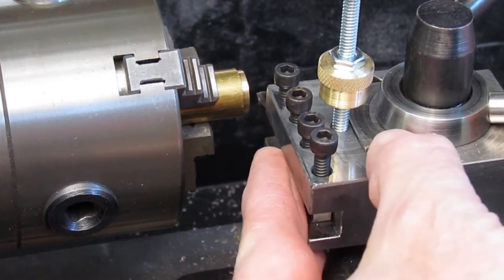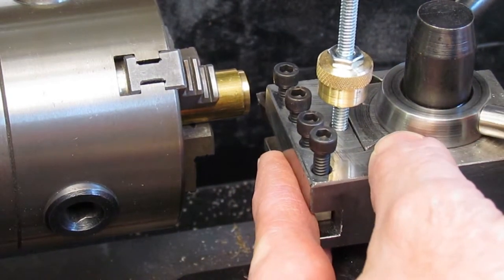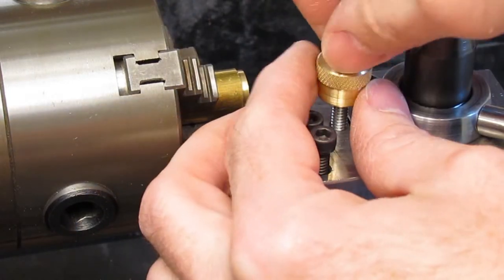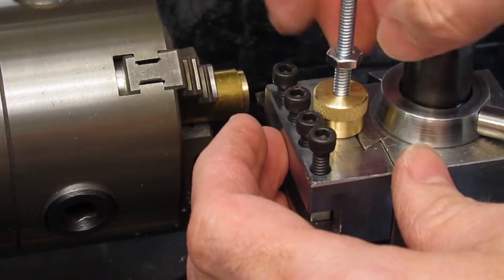To adjust and set the height, loosen the cam handle and set the tool height near center, adjust the brass adjust nut, and secure in its place by tightening the handle.